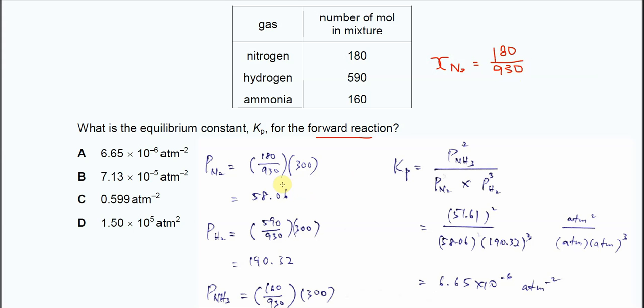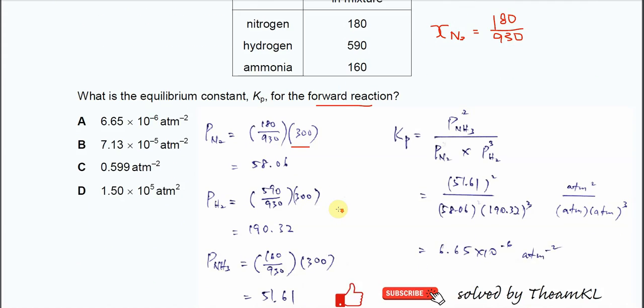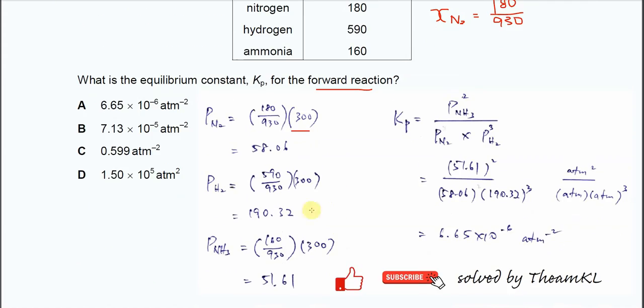Use this mole fraction times the total pressure, which is 300, to get the partial pressure for nitrogen. The partial pressure of nitrogen is 58.06. You put it in atm because the answer options are in atm.